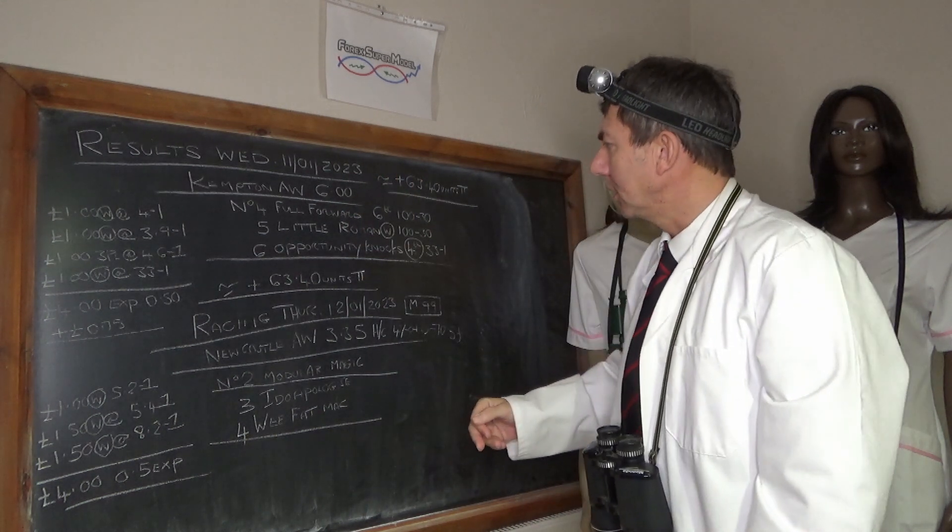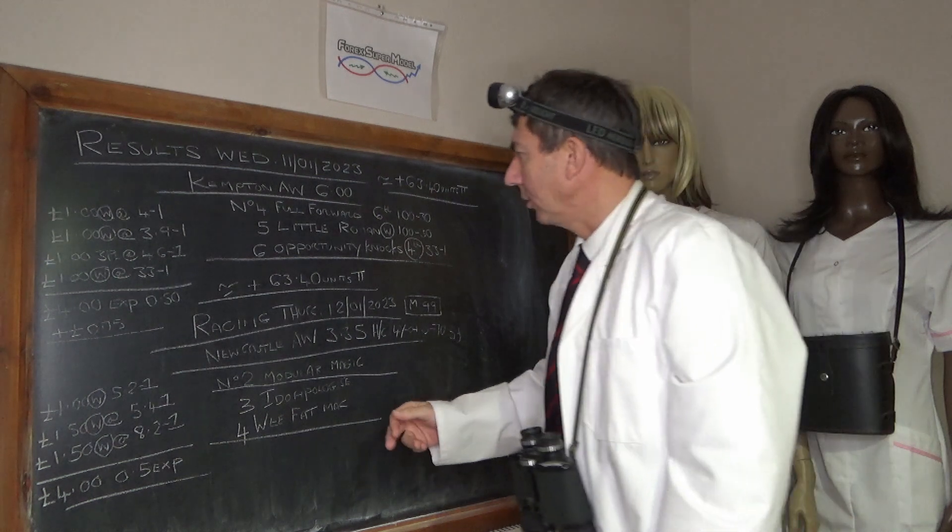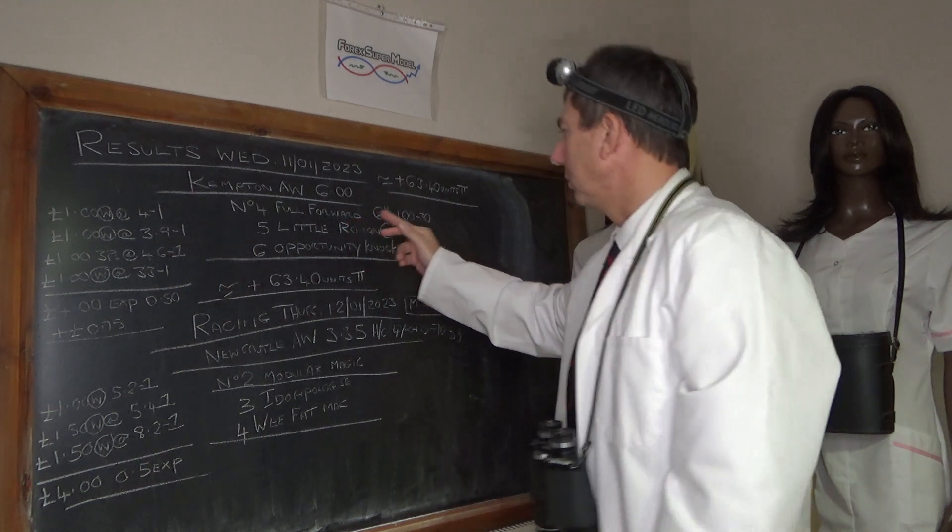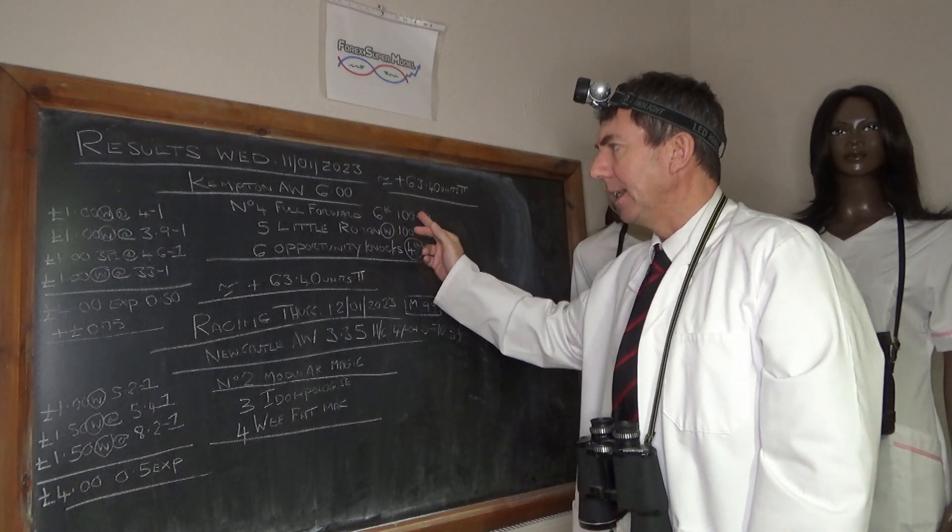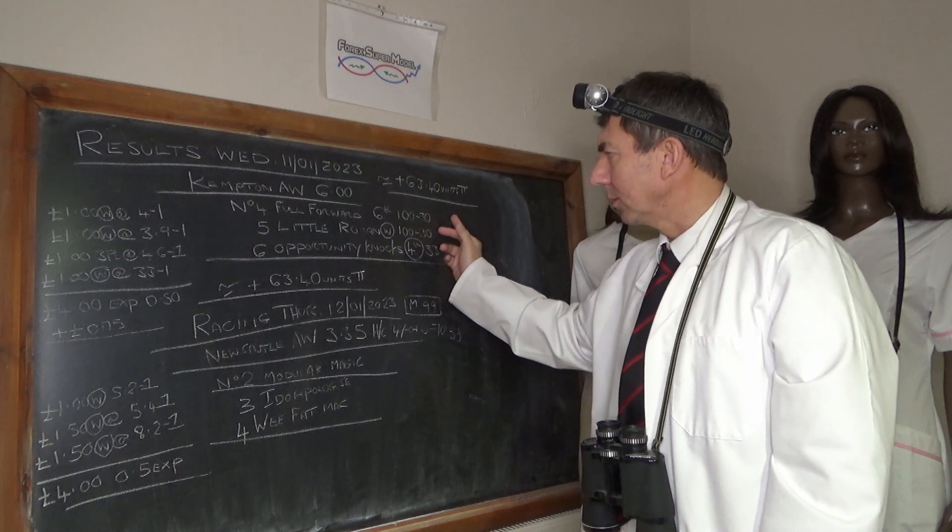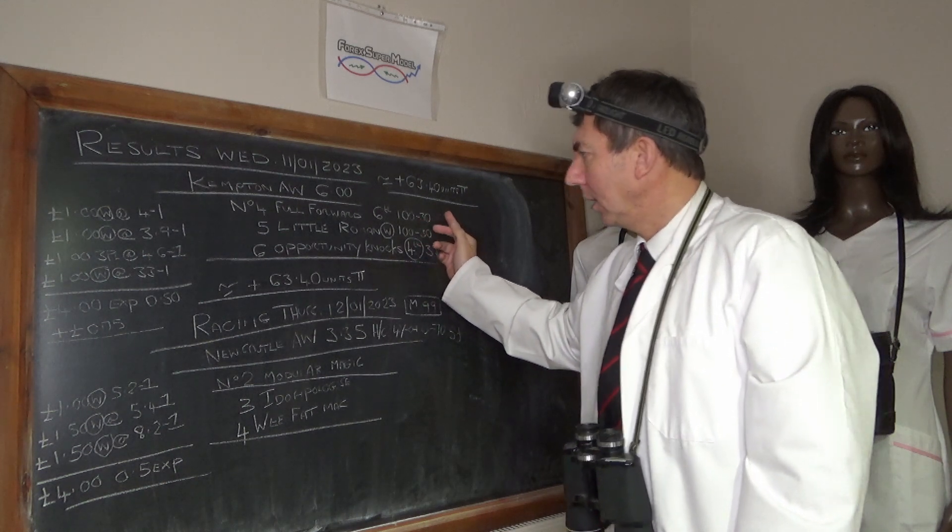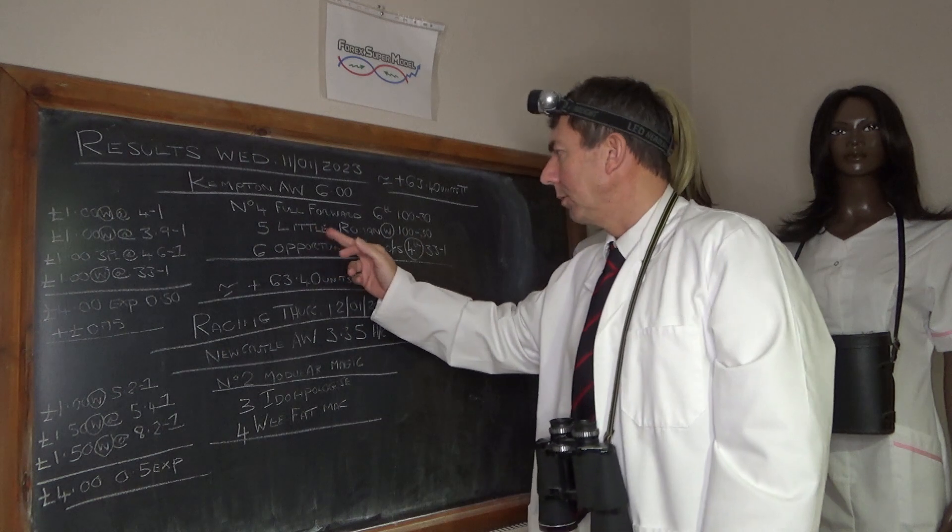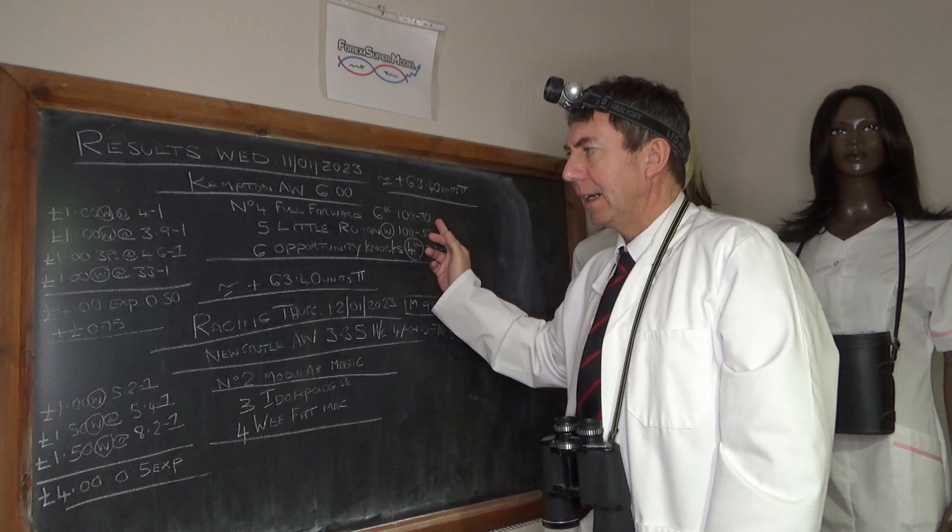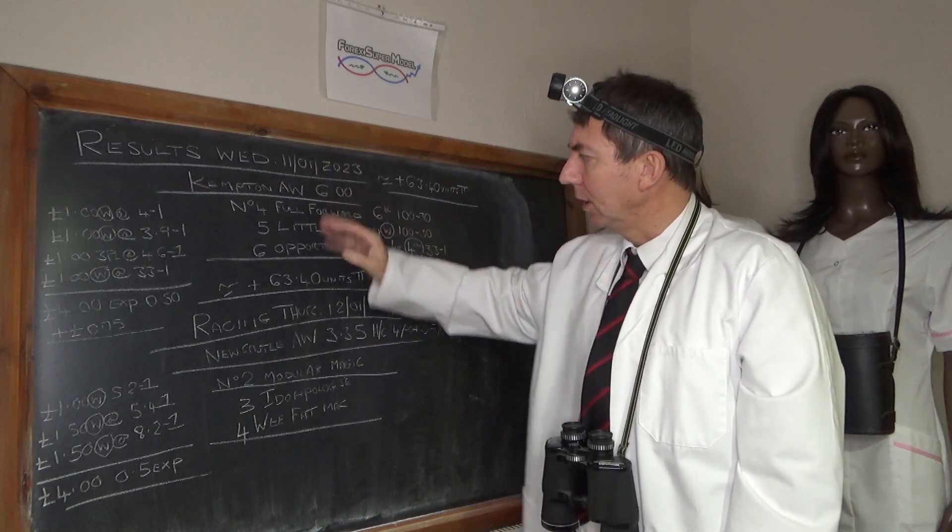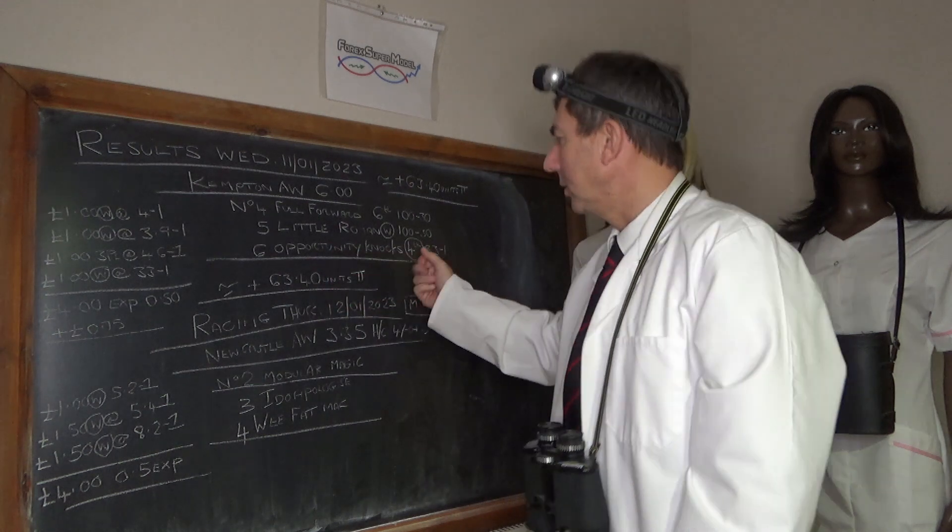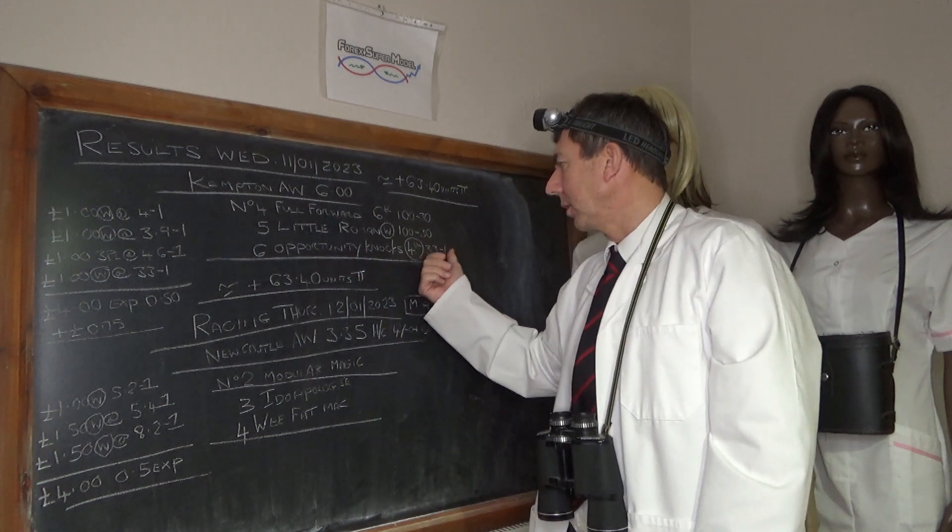We had a go at three horses in that race. Number four, Full Forward, which came sixth at 130, so that was last of the six because it was a non-runner. We got the eventual winner which was number five Little Roman which won at 100 to 30. We were using those two to lever into this big price horse which was number six Opportunity Nox which came fourth unfortunately at 33 to 1.